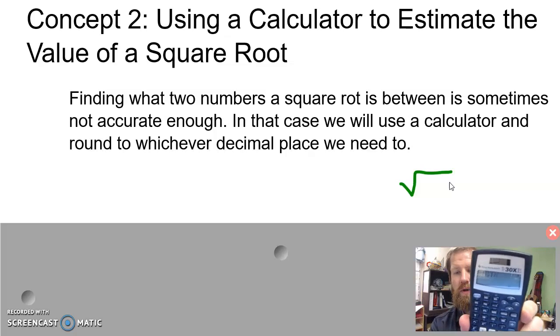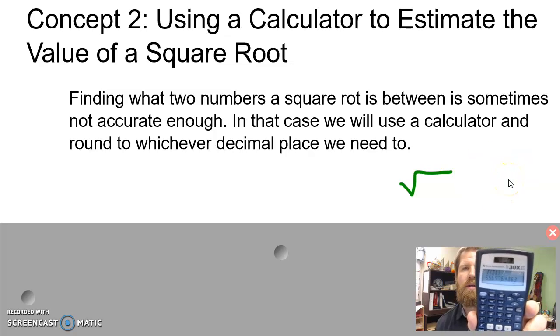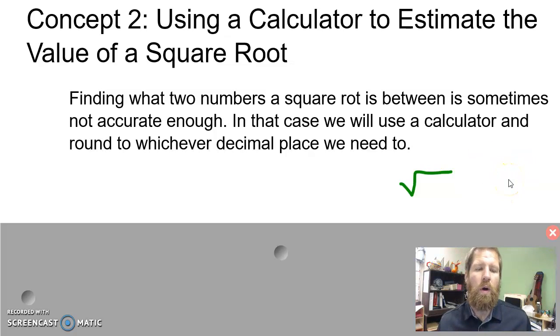Square root of 31 will give you a long string of decimals, and then usually the problem you're looking at will tell you what decimal place to round it to.